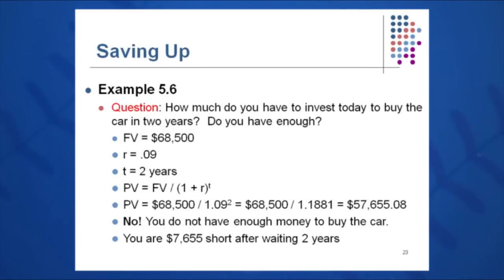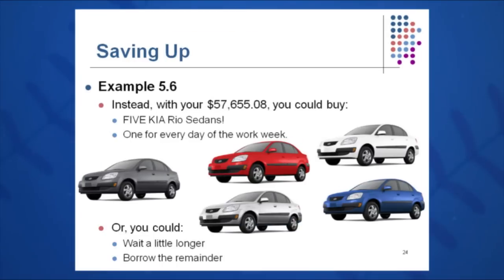Present value equals future value over 1 plus R to the T, and the rate in this case is 9%. So $68,500 divided by 1.09 squared gives $57,655. That means I need $57,655 in the bank to grow it to $68,500 in two years. So I do not have enough money — I'm $7,655 short. I have a few options: I can borrow some money, maybe not buy that Mercedes-Benz or BMW, wait until the third year, buy five Kias with the money I have saved up, or buy a used car instead of a new car to get costs down.